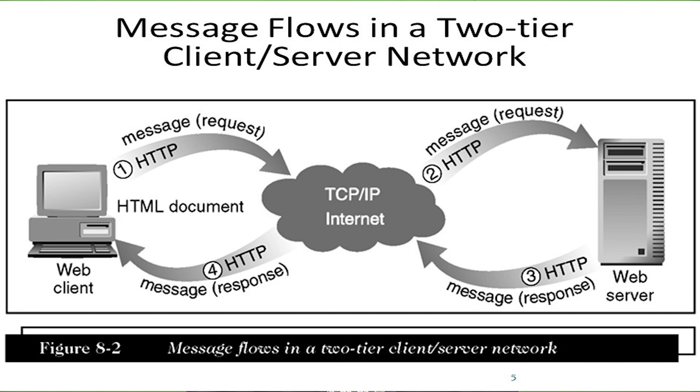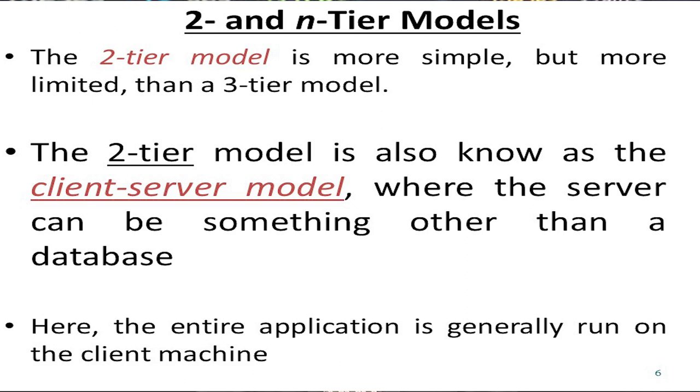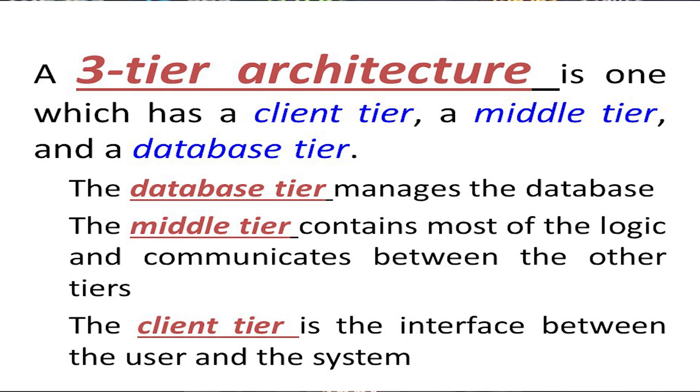The response is received by the client. This client-server network is called a two-tier technology, where one tier is the client and the other is the server. The two-tier model is simpler but more limited than the three-tier model. In the two-tier client-server model, the entire application logic generally runs on the client machine, though it is actually processed by the server.